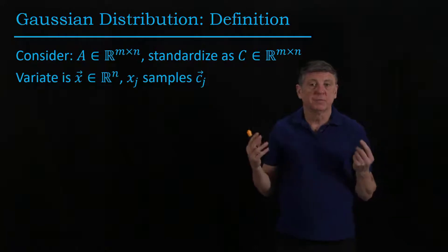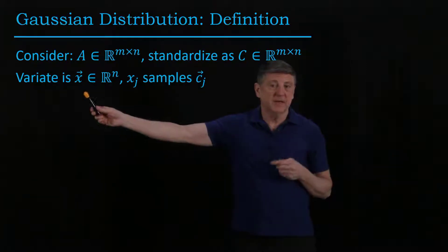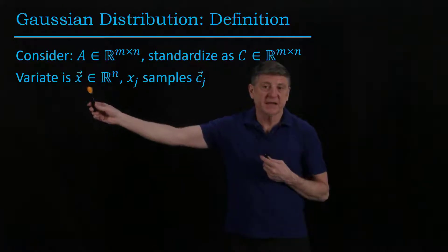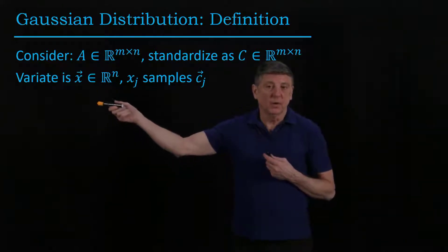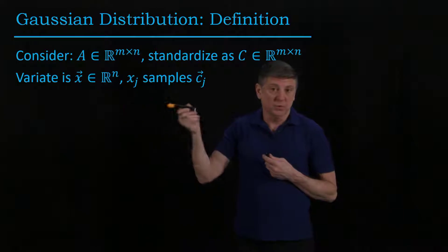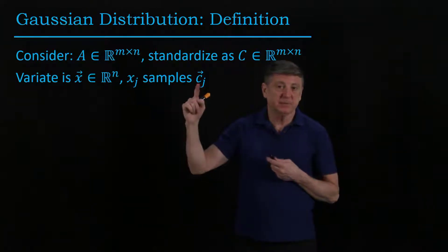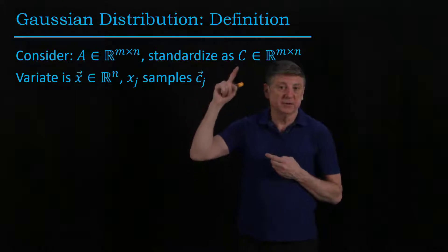So we form the variate as usual, this is represented in statistics by X, and this is the rows of our matrix, and each one of these entries samples the columns of our standardized data.